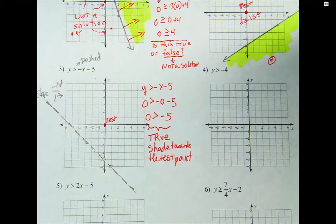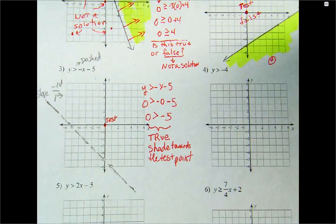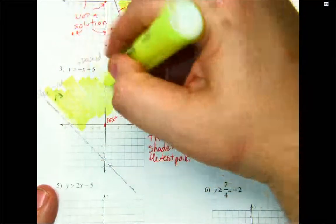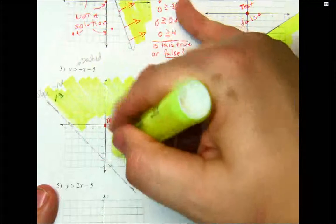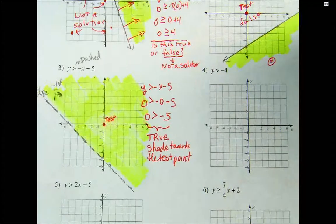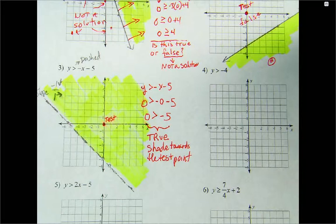You're going to want to shade towards the test point now. So we'll take zero minus five, and since it's true, we're going to shade towards the test point. This is true. Okay, good.